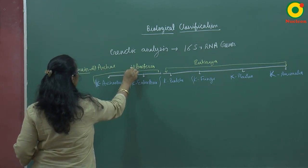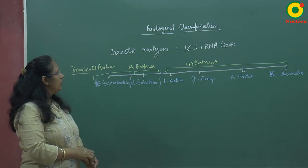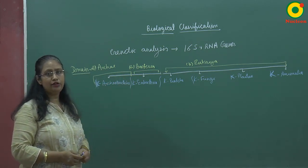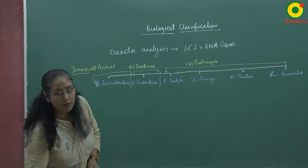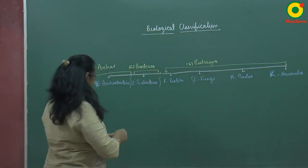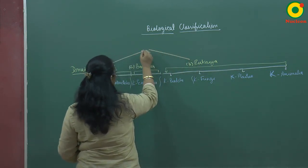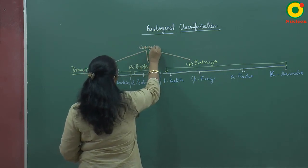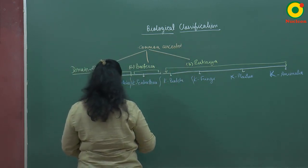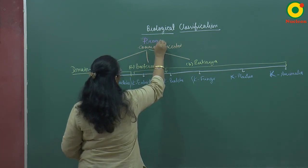So there are three domains: first is Archaea, second is Bacteria, and third is Eukarya. Carl Woese stated that all three domains arise from a common ancestor, which he named the progenote.